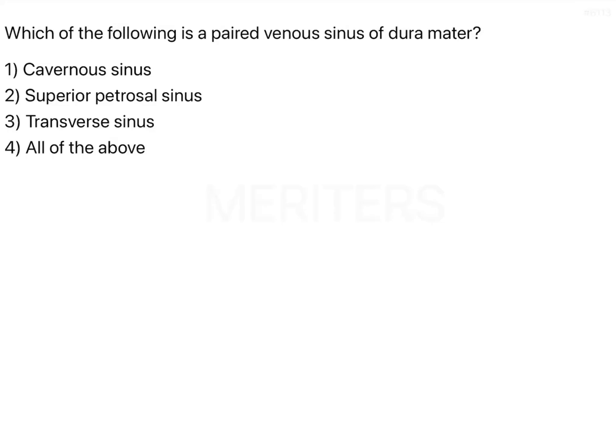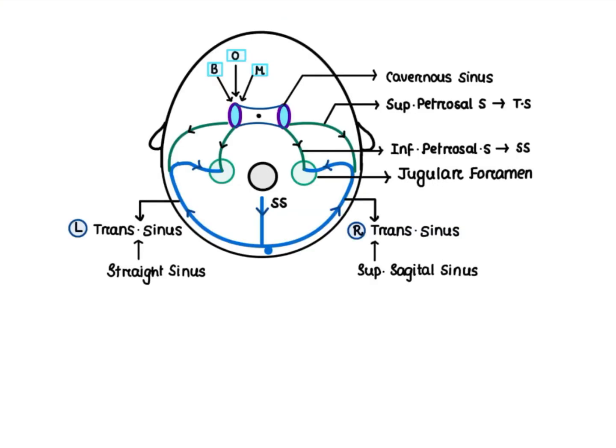Which of the following is a paired venous sinus of the dura mater? Here we have to understand the paired venous sinuses — these are the sinuses seen between the layers of the dura mater. The options are cavernous sinus, superior petrosal sinus, and transverse sinus. Let's get an idea through this illustration.